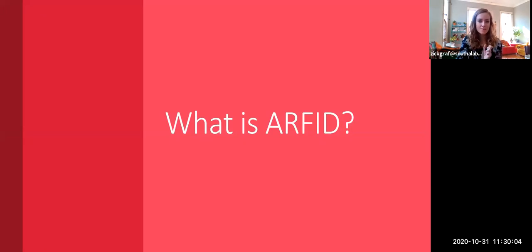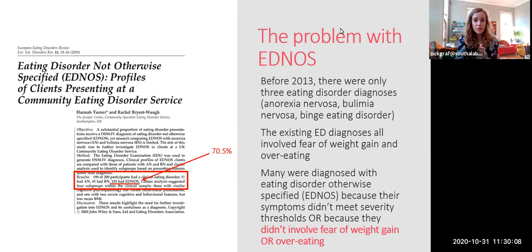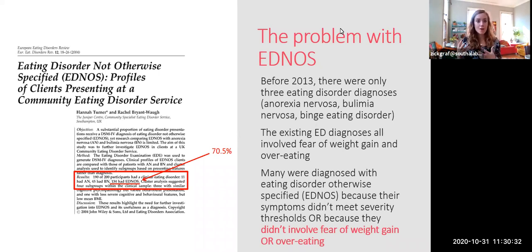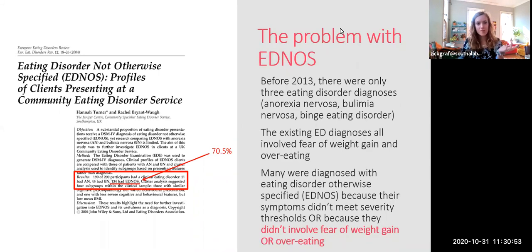What is ARFID — avoidant restrictive food intake disorder? First, a quick history lesson. Before DSM-5 was published in 2013, DSM-4 only listed three eating disorder diagnoses: anorexia nervosa, bulimia nervosa, and binge eating disorder. All three of these involve fear of weight gain, a desire to lose or not gain weight, and a tendency to engage in uncontrolled overeating. There was another diagnosis for people who didn't meet those criteria called eating disorder not otherwise specified, or EDNOS.